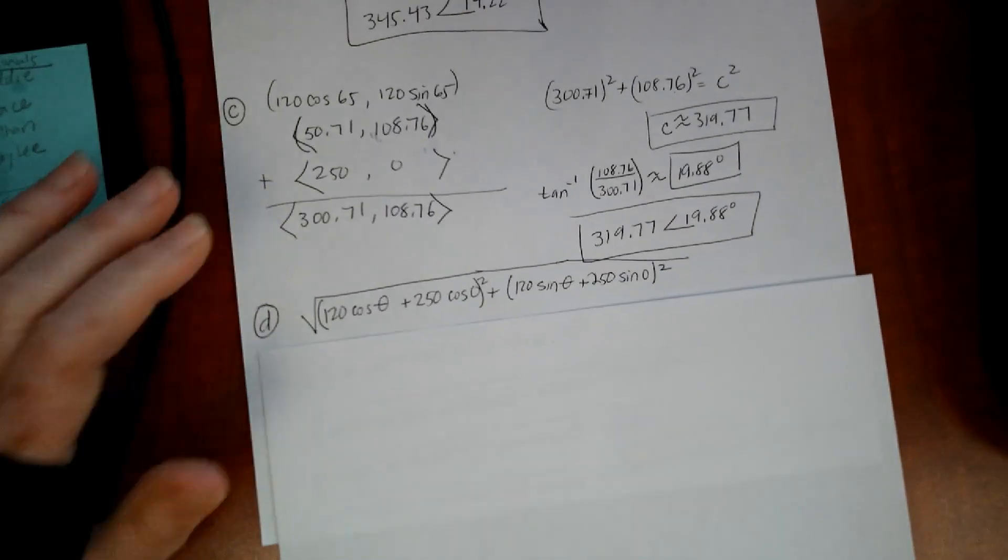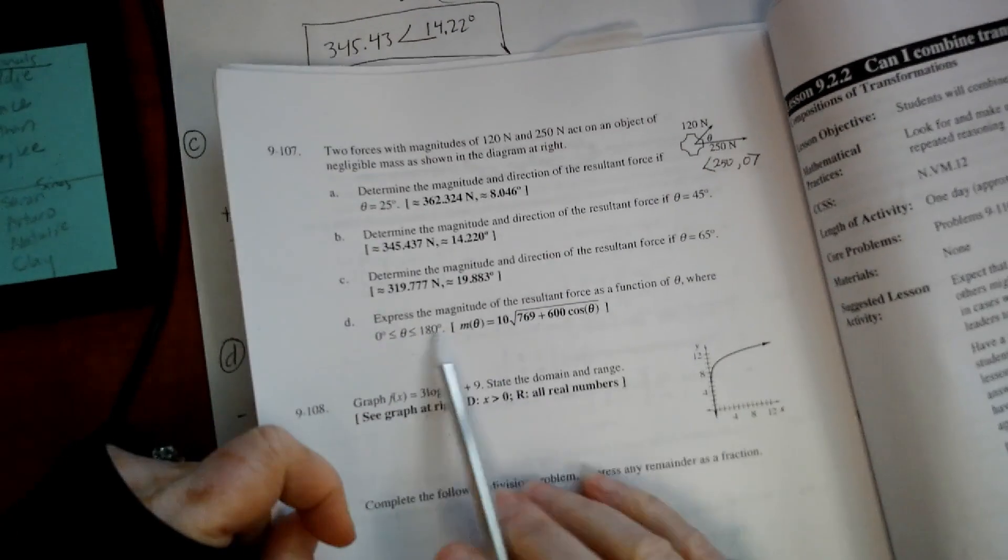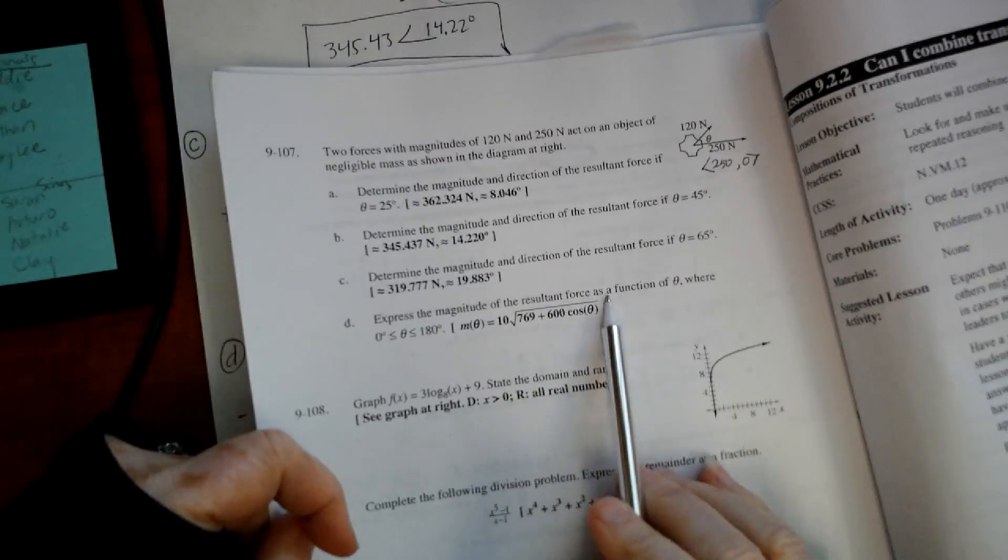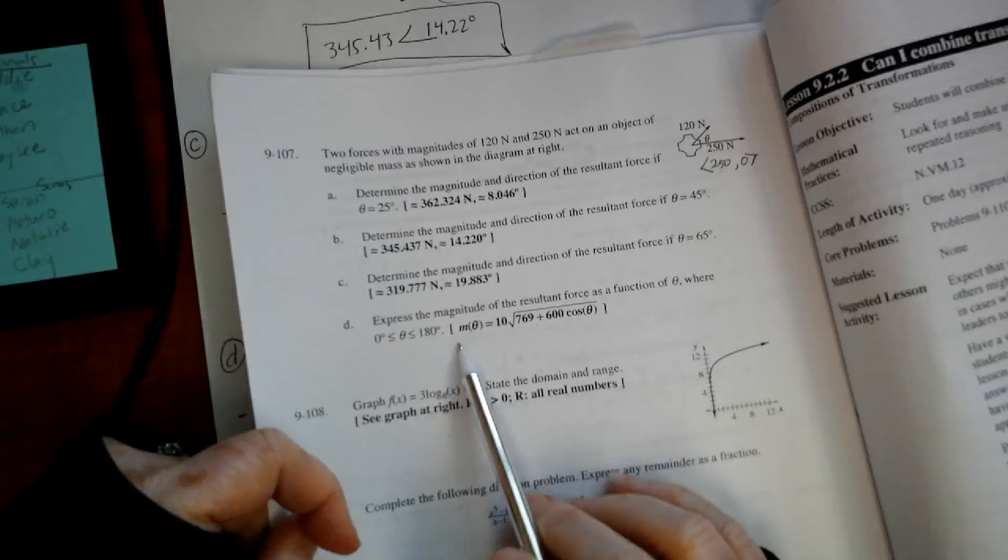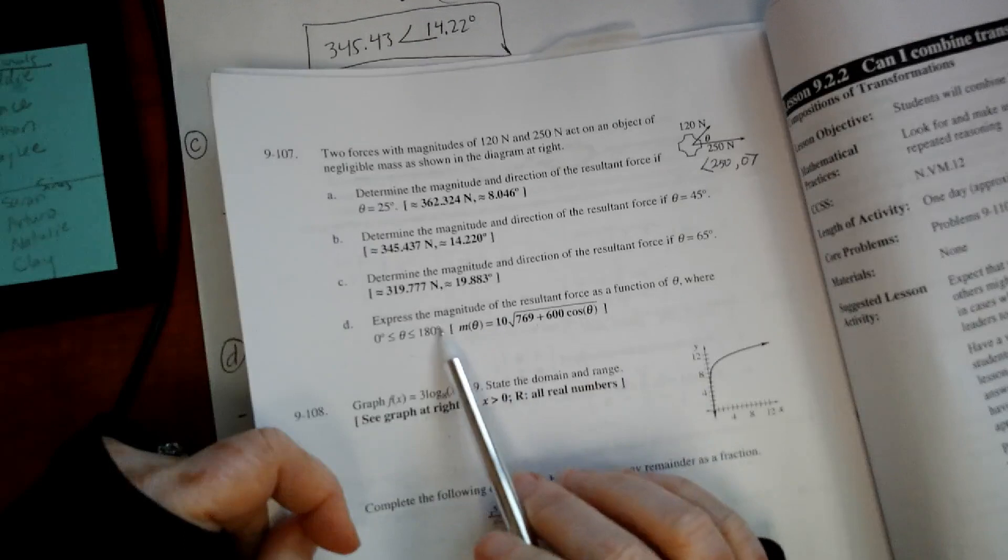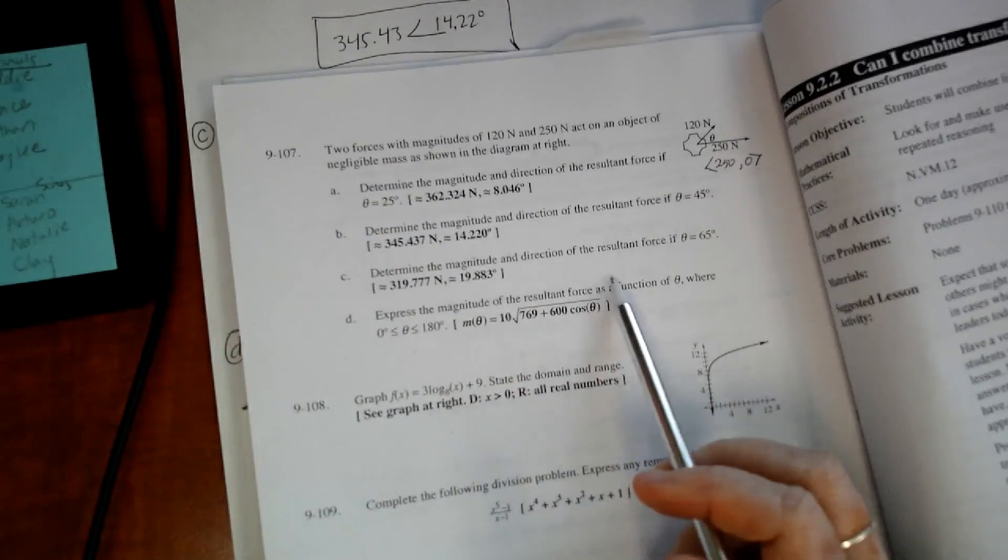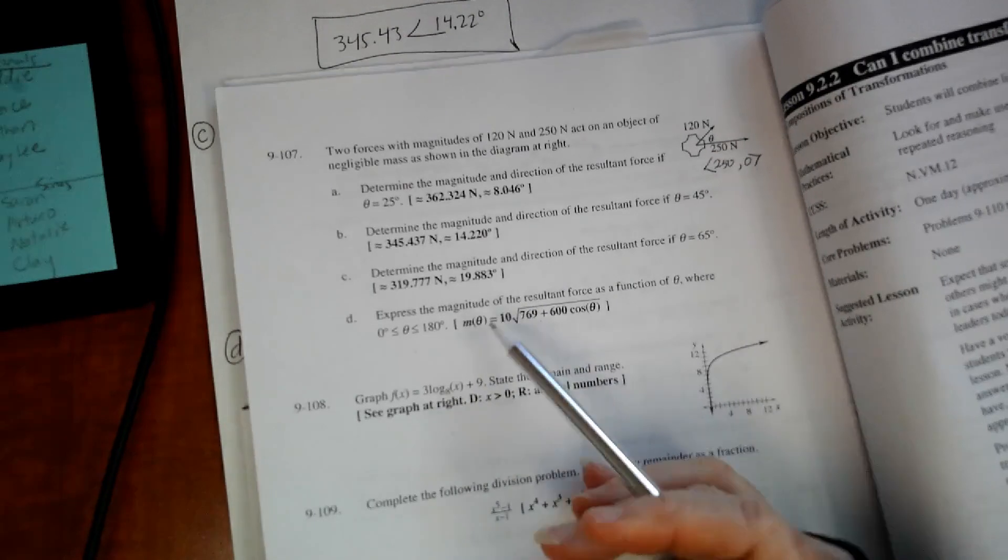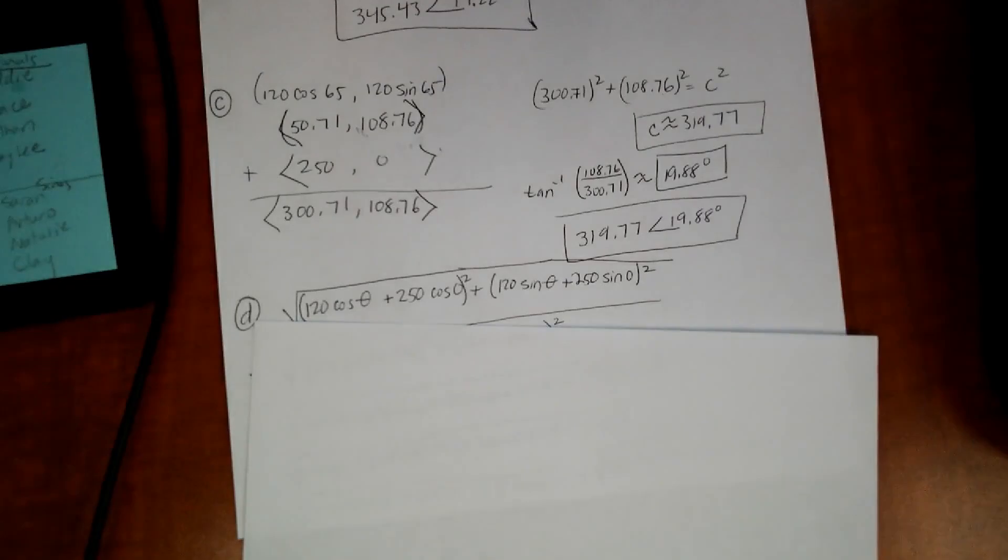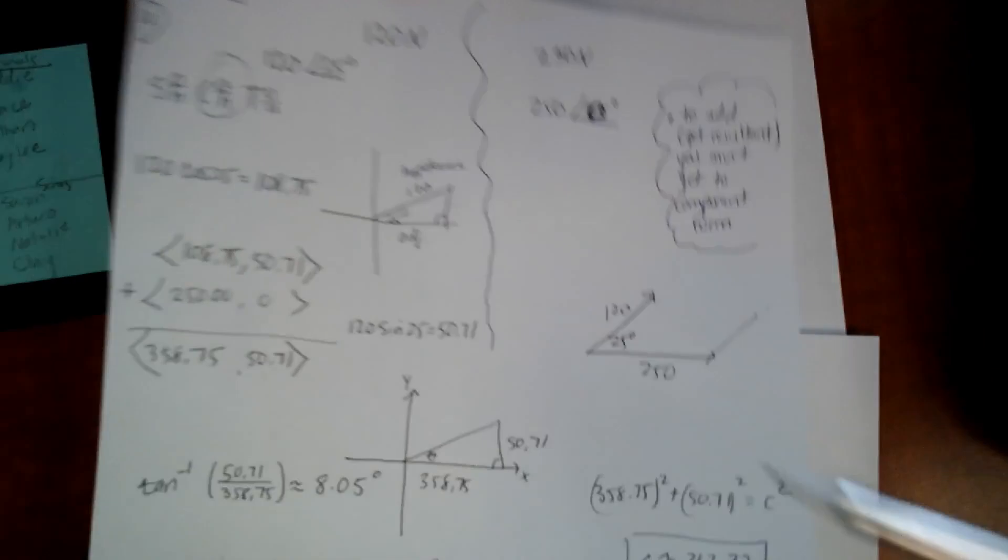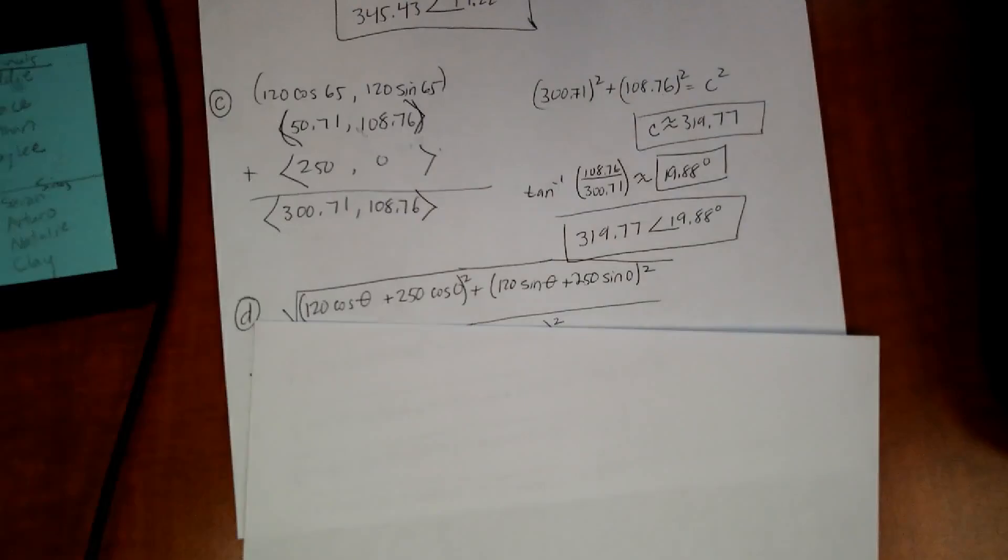Letter D was, I feel like it was kind of mean, but express the magnitude of the resultant vector as a function of theta, where theta is between 0 and 180. I know that I'm not going to get just a regular answer, it's going to be in terms of theta. I know there was a little procedure that, the first one I did, I wrote it all out like this, but then I started seeing there's a little routine here.